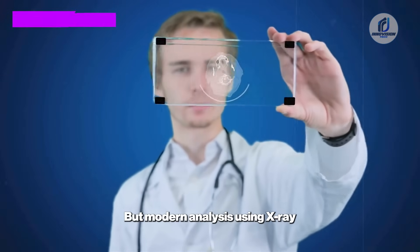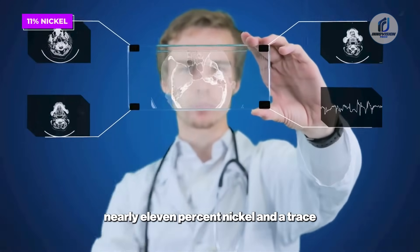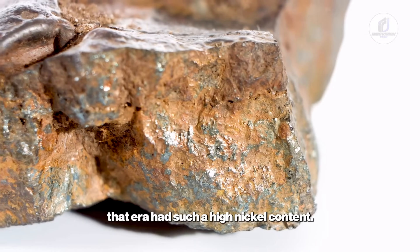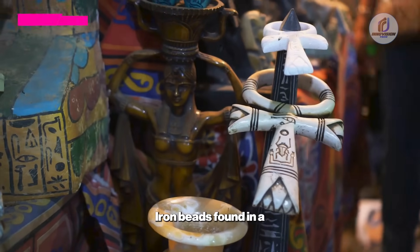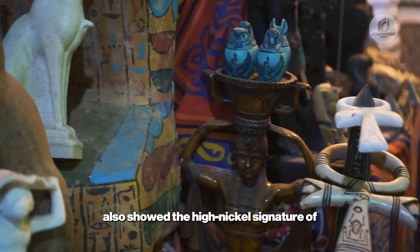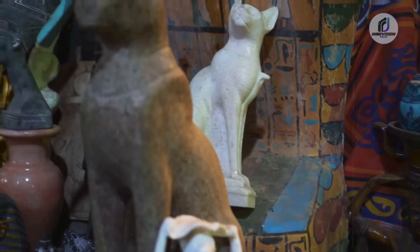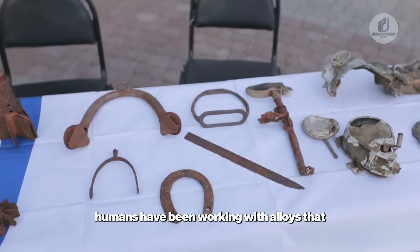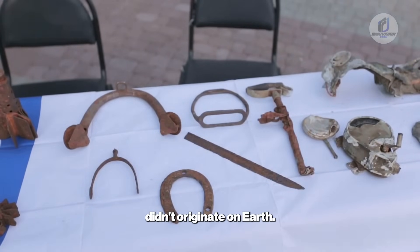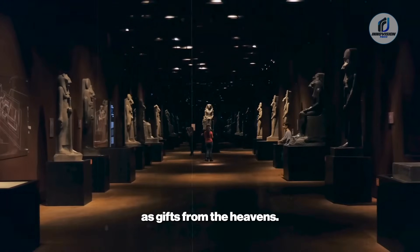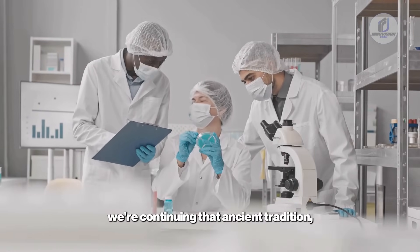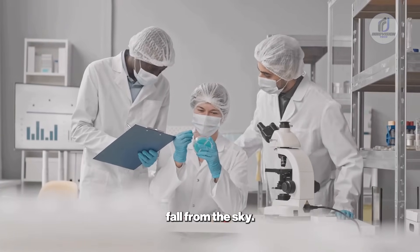But modern analysis using X-ray fluorescence revealed its blade contains nearly 11% nickel, and a trace of cobalt, a composition that perfectly matches that of iron meteorites. No iron smelted from terrestrial ore in that era had such a high nickel content. This wasn't a one-off. Iron beads found in a 5,000 year old Egyptian cemetery also showed the high nickel signature of an extraterrestrial origin. The ancient Egyptians even had a name for this material: iron of the sky. These artifacts show us that for millennia, humans have been working with alloys that didn't originate on earth. They recognize these materials as special as gifts from the heavens. Now, as we analyze the impossible alloys of 3I Atlas, we're continuing that ancient tradition, questioning the origin of metals that fall from the sky.